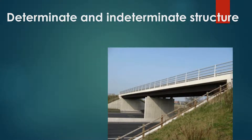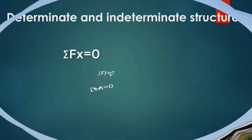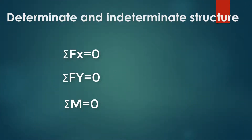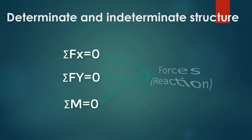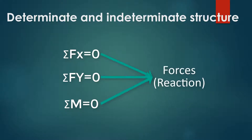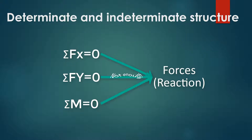Determinacy: a structure can be called determinate if the equilibrium equations provide enough and sufficient conditions for equilibrium. If all forces for a structure can be determined using equilibrium equations only, this structure is determinate. But if the unknown forces are more and can't be determined using equilibrium equations, then this structure is indeterminate.